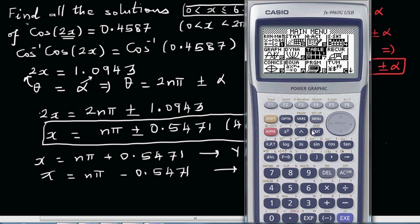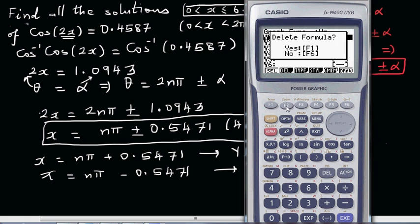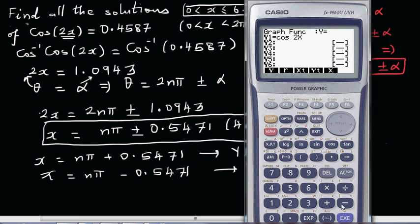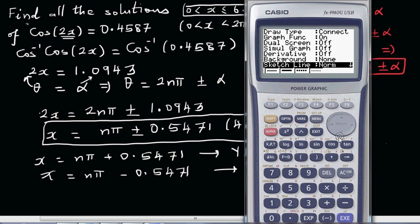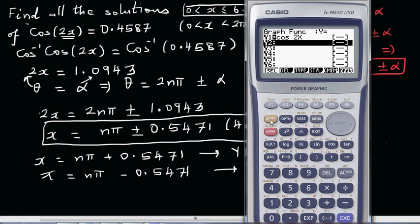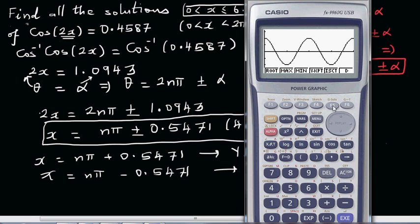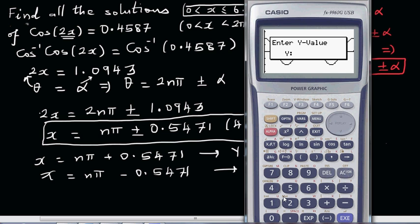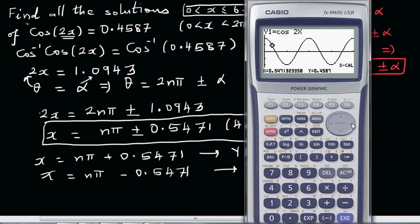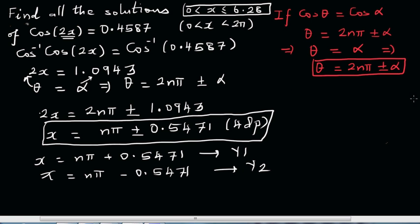Let me go to graph and delete this and type in cos(2x). I have to check my setting, it should be in radians. I'll go from 0 to 2π and graph it. You've got two cycles. Go g-solve, x-calc, and for y go 0.4587. This is your first value, this is your second value, this is your third, and this is your fourth. You can write all the four values. This is how you find all possible solutions.